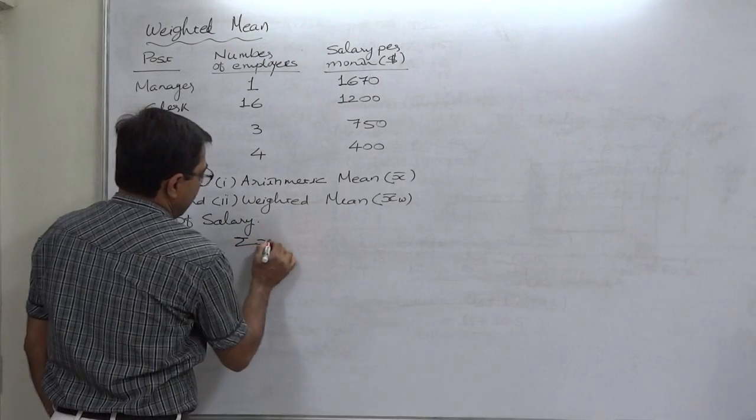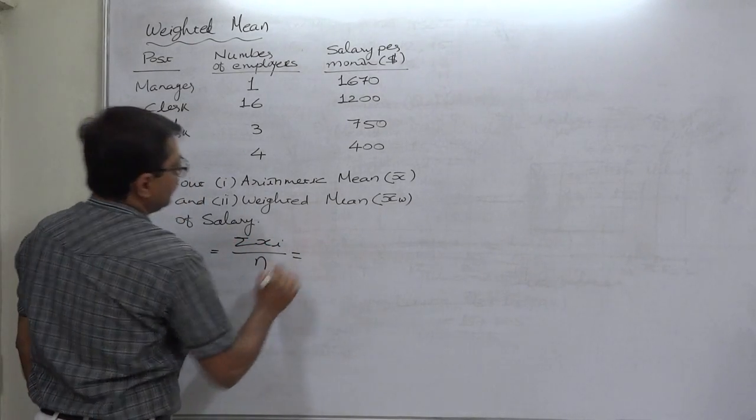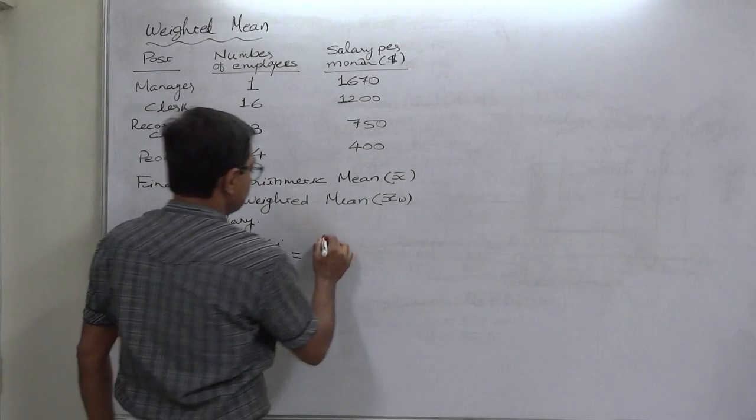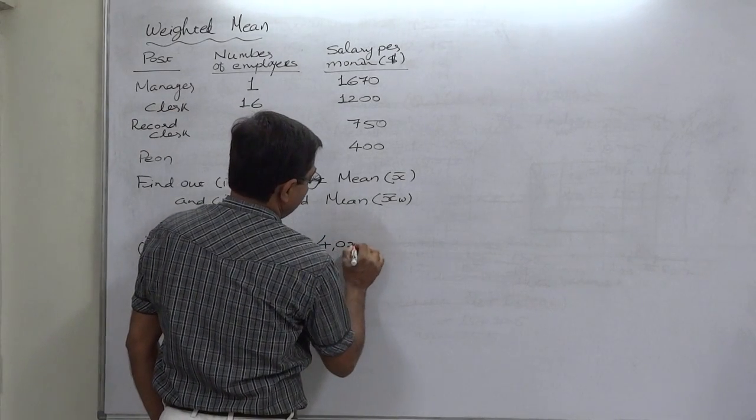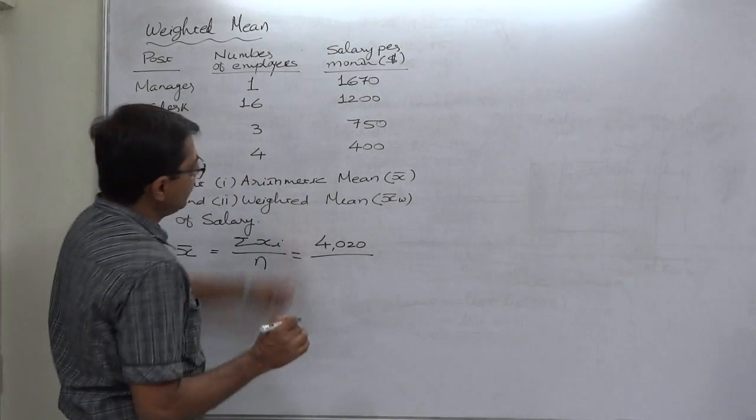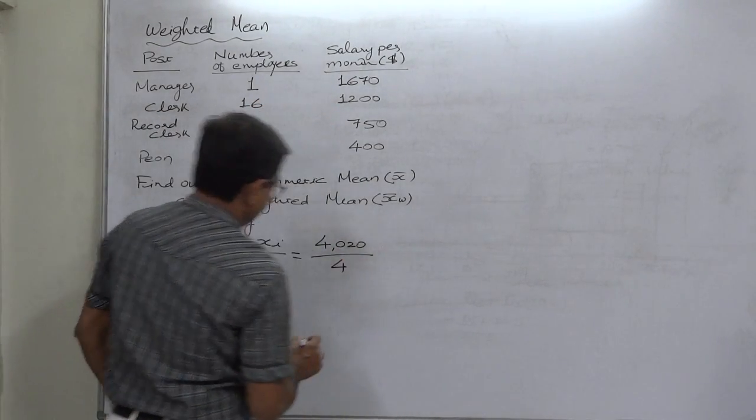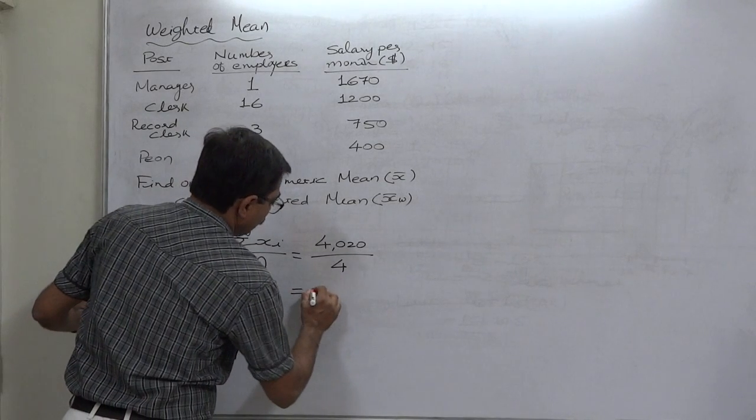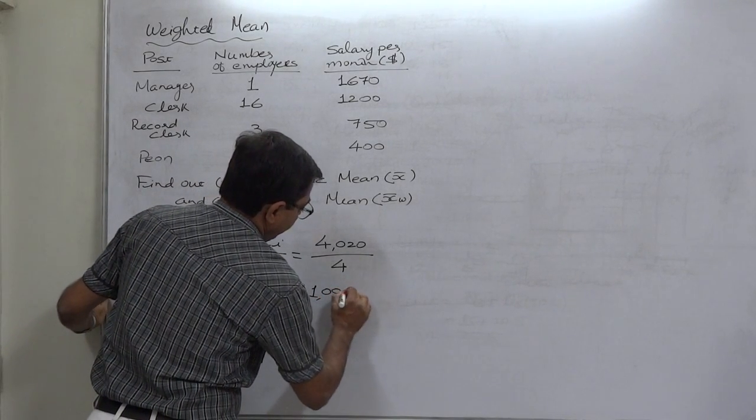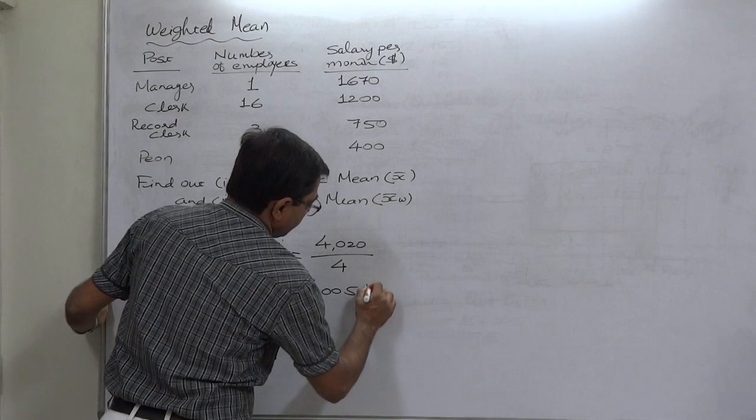Yes, it is 4020 divided by number of cases 1, 2, 3, and 4. It comes to 1005 rupees per month. This is our mean or X bar.